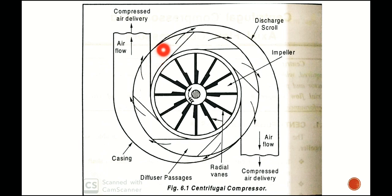The casing surrounds the rotating impeller — this is a spiral casing. We have a diffuser housed in the radial portion of the housing inside this casing. So first we have the shaft, from which power is given to the impeller. The impeller contains the radial curved vanes, from which air moves on to the diffuser, and from the diffuser it moves on to the casing.